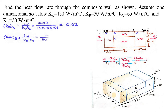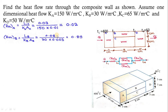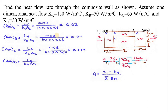For slab B, the resistance is LB divided by KB times AB. The area of B is 10 cm × 3 cm = 30 cm², which converts to 0.003 m². The thickness LB is 8 cm = 0.08 m. Similarly, calculate the thermal resistance for C and the thermal resistance for D using their respective dimensions and conductivities.